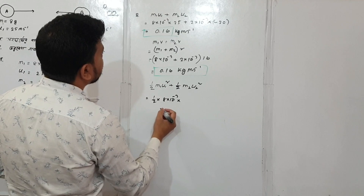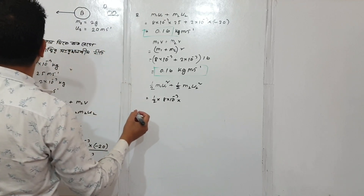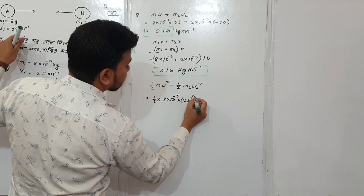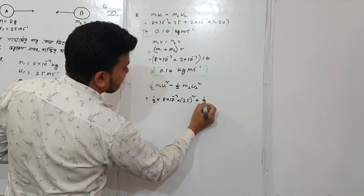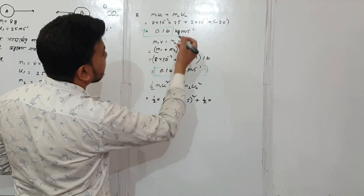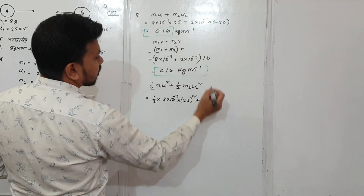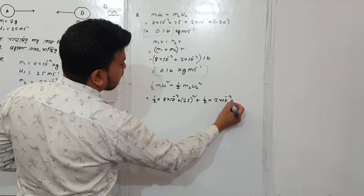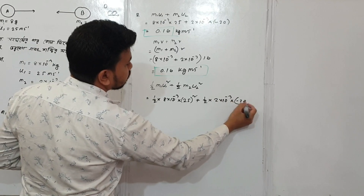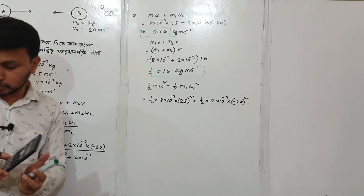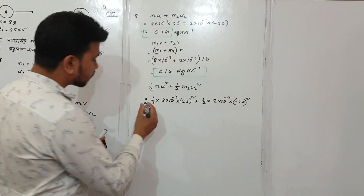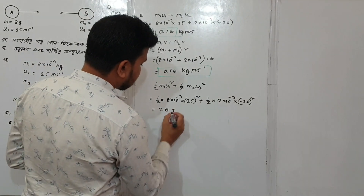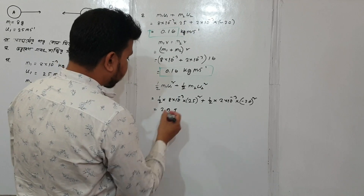u1 = 25 squared, plus half into m2 = 2 × 10⁻³ into u2 = -20 squared, giving approximately 2.9 joules for the initial kinetic energy.